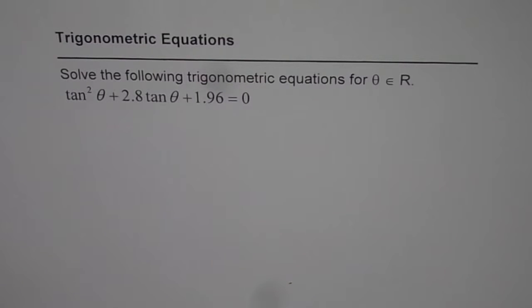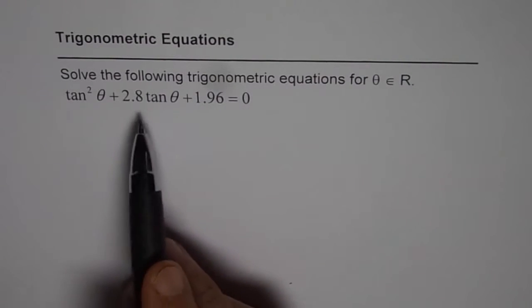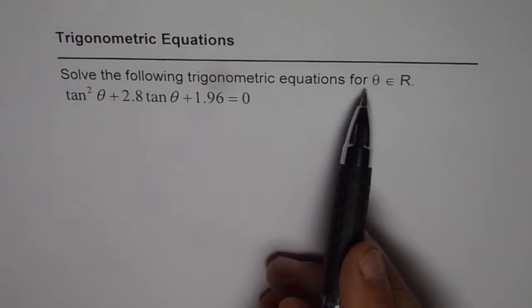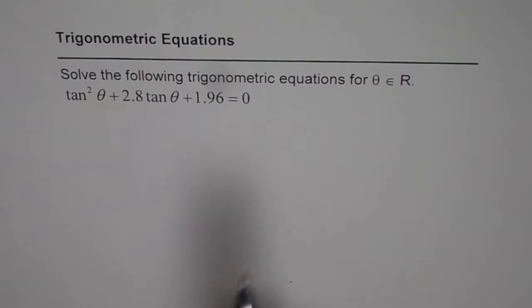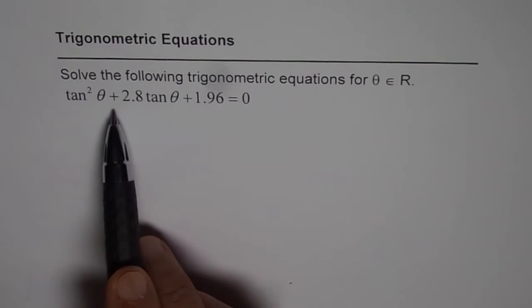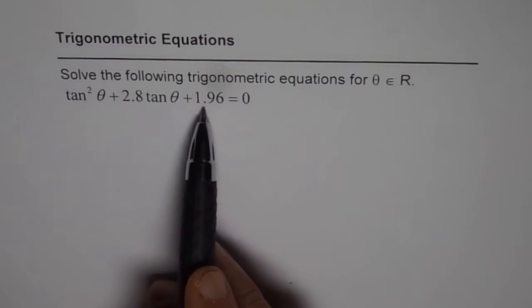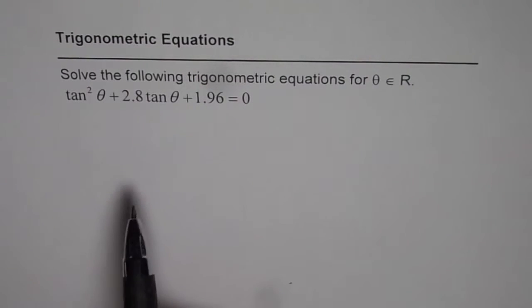I'm Anil Kumar and now let us understand how to solve trigonometric equations which are given in quadratic form. Here we have an example. Solve the following trigonometric equation for theta belongs to real numbers where tan squared theta plus 2.8 tan theta plus 1.96 equals to 0.